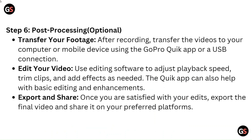Step 6: Post processing (optional). Transfer your footage — after recording, transfer the videos to your computer or mobile device using the GoPro Quick App or a USB connection. Edit your video using editing software to adjust playback speed, trim clips, and add effects as needed. The Quick App can also help with basic editing and enhancements. Once you are satisfied with your edits, export the final video and share it on your preferred platforms.